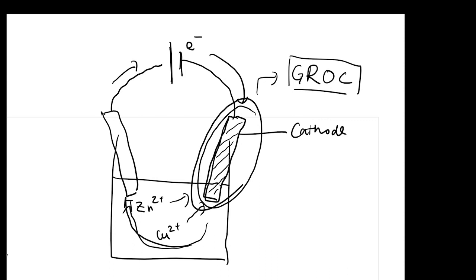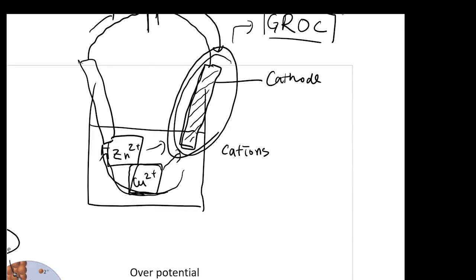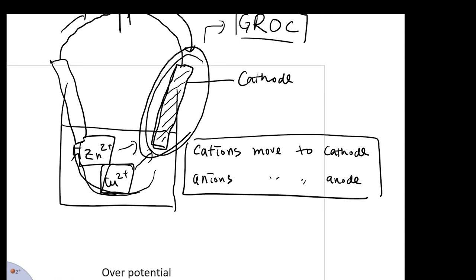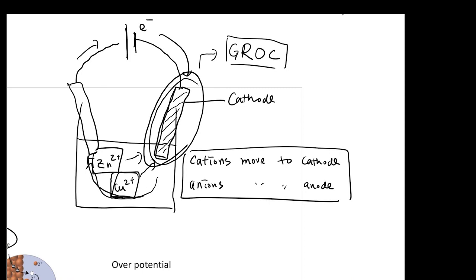In the electrolysis cell, reduction happens at your cathode. Your cations inside your solution — for example, Cu²⁺ or Zn²⁺ — will move toward the cathode. Cations move to the cathode and anions move to the anode. Inside the solution, you will also have some anions, such as bromide or chloride. All the cations are moving to your cathode, so the anions are pushed to the other side. These anions are going to lose electrons, undergoing an oxidation reaction.